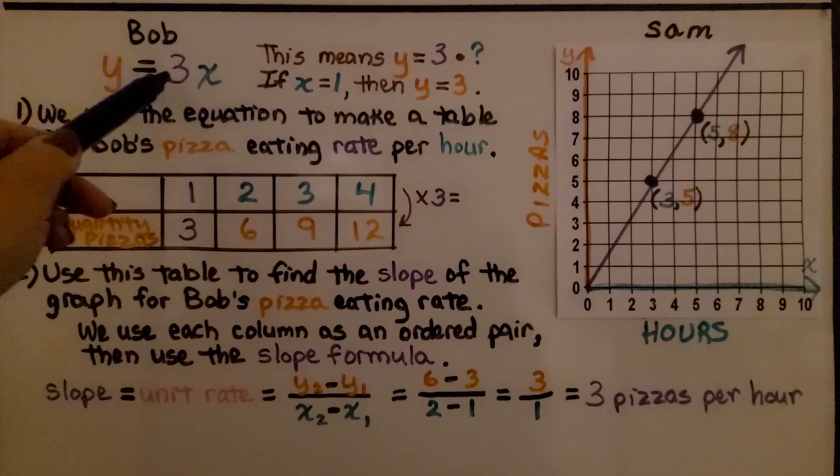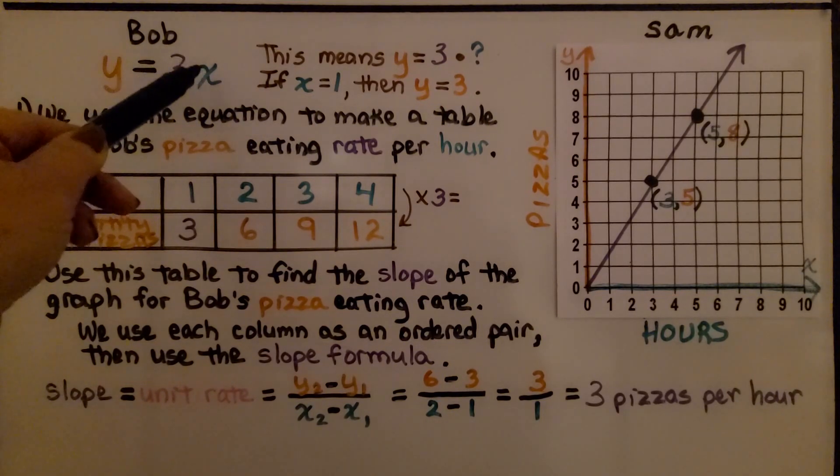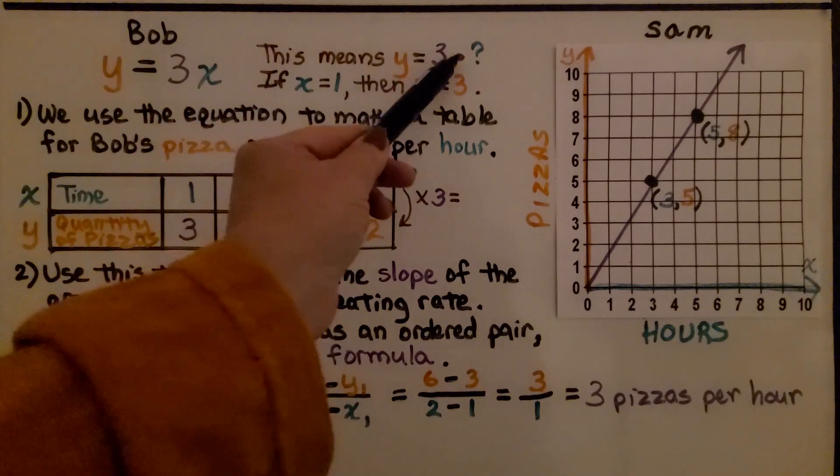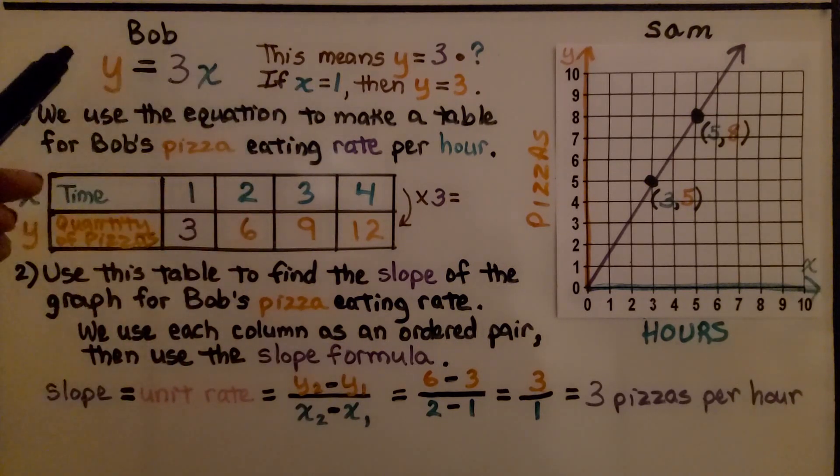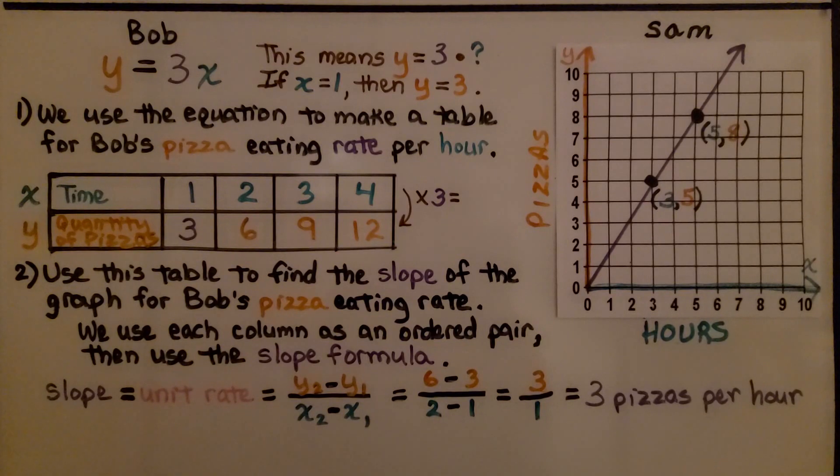Bob's equation is y equals 3x. When the variable is next to a number, that's the coefficient. That means we're multiplying 3 times some number x. If x equals 1, then y would equal 3 because we have 3 times 1 equals 3.